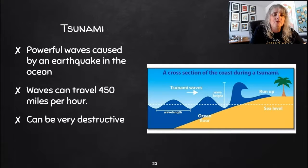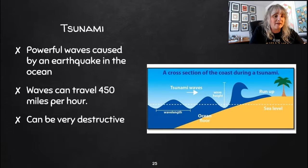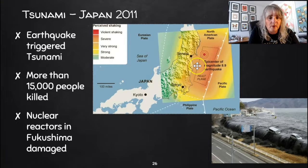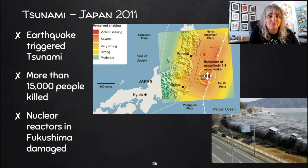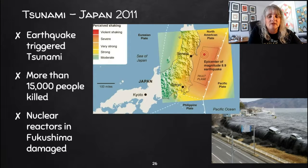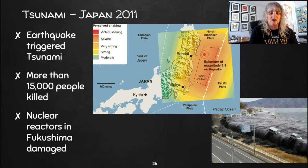A tsunami is a powerful wave caused by an earthquake in the ocean. Those waves can travel 450 miles per hour and can be very destructive. In Japan in 2011, there was an 8.9 magnitude earthquake off the coast of Japan — a pretty big earthquake. That earthquake displaced a lot of water and caused a tsunami that hit the east coast of Japan. More than 15,000 people were killed, and one reason we still talk about this earthquake today is that there was a nuclear power plant in Fukushima that was damaged from that tsunami.